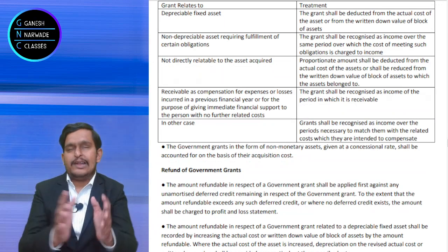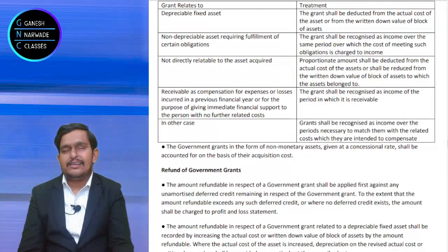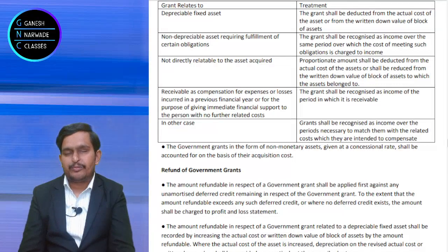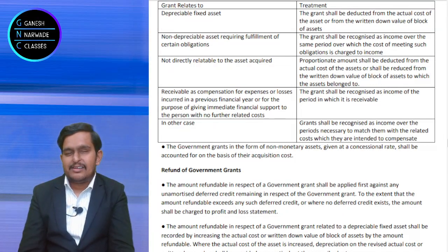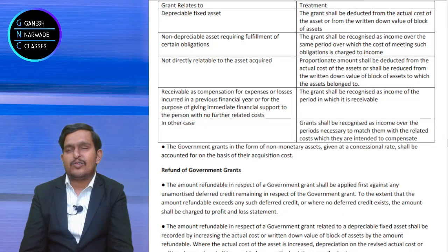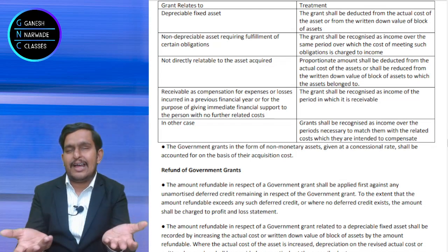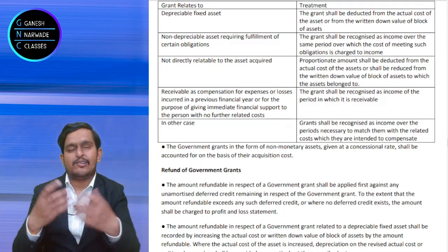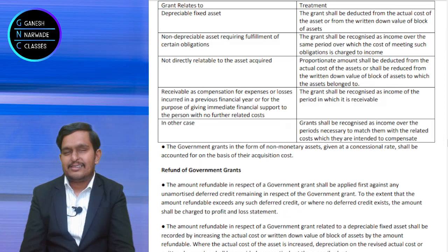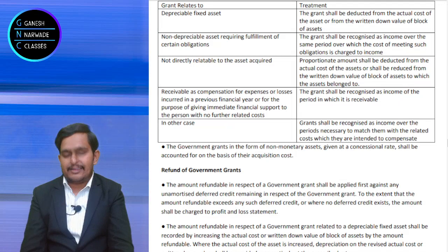Suppose you get a grant not in cash but in kind — a non-monetary grant. Suppose 1 crore worth of land you got for 10 lakh rupees from the government. Then treat those 10 lakhs only as the cost of the asset. You cannot do anything with the 90 lakhs which you did not pay. This is how you should understand if it is a non-monetary asset received as a grant from the government.